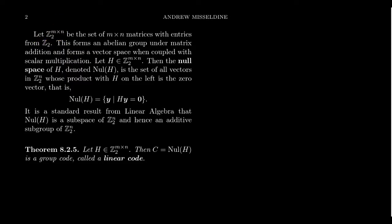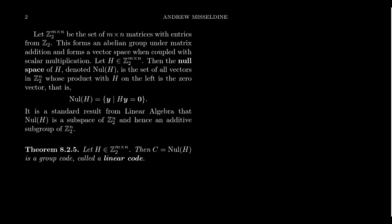Z2 to the M by N is an abelian group with respect to matrix addition. Addition is associative and commutative, the zero matrix acts as the additive identity, and every matrix has an inverse. If you have a matrix A, its inverse is negative one times the matrix — but working in binary, there's no such thing as a negative. Every element is its own inverse: A plus A equals the zero matrix.